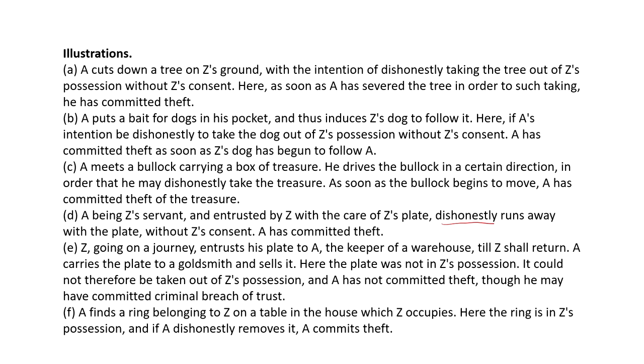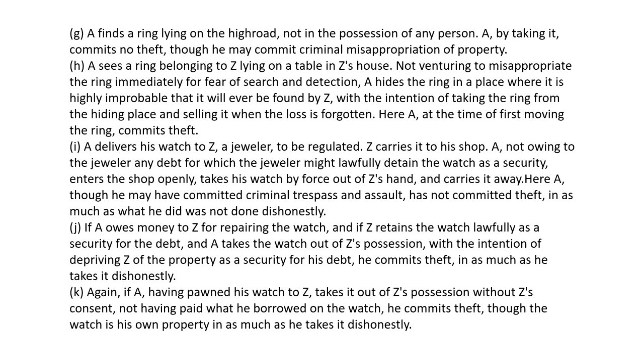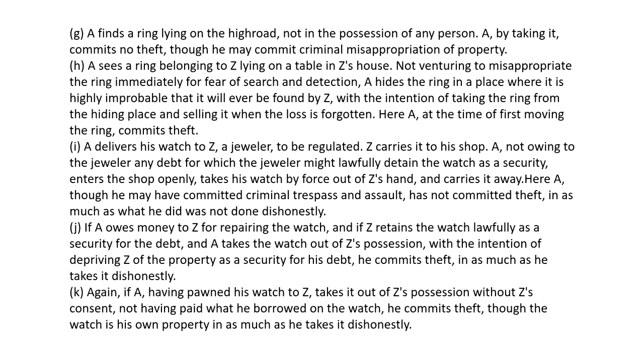Illustration F: A finds a ring belonging to Z on a table in Z's house — the ring is in Z's possession, and if A dishonestly removes it, A has committed theft. Then: A finds a ring lying on the high road, not in the possession of any person. Since theft is an offense against possession and this is not in someone's possession, taking it would not constitute theft — but it is not a legal act. A by taking it commits no theft, though he may commit criminal misappropriation of property, because the property is not in anyone's possession but A knows it is not his own.